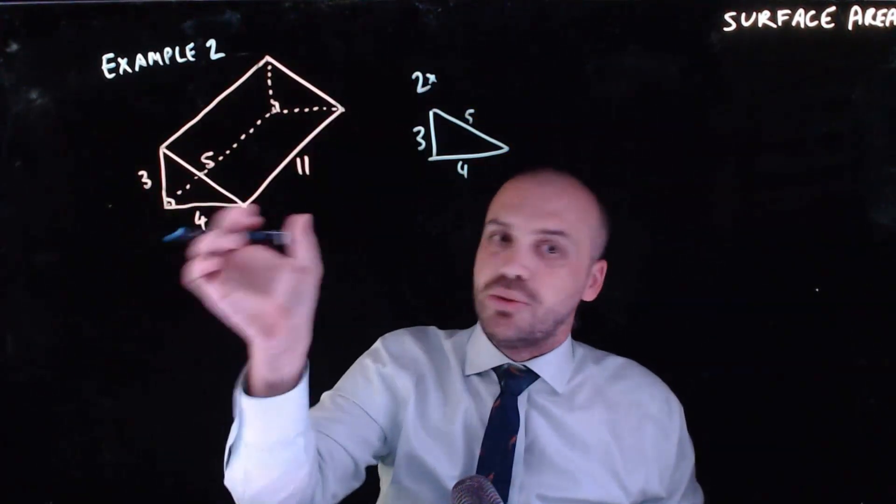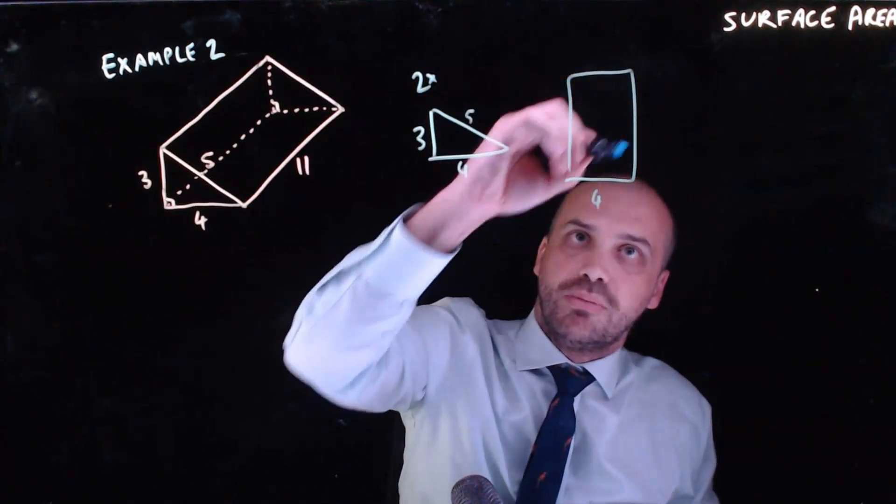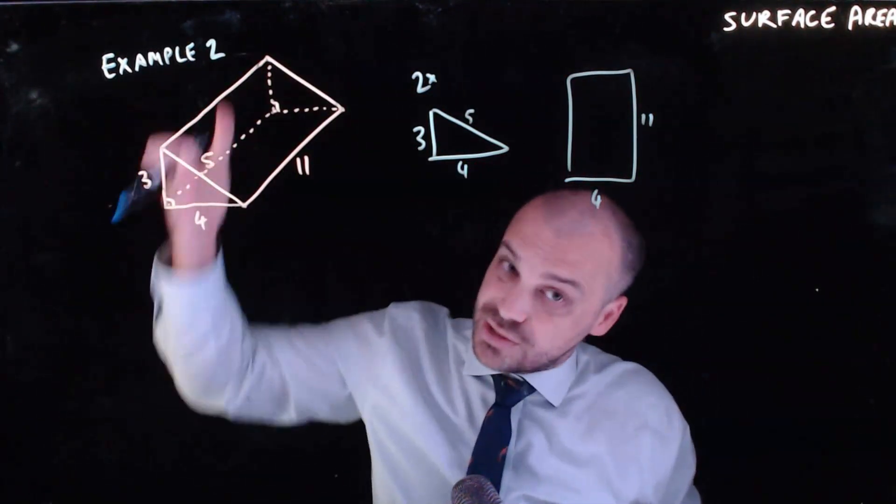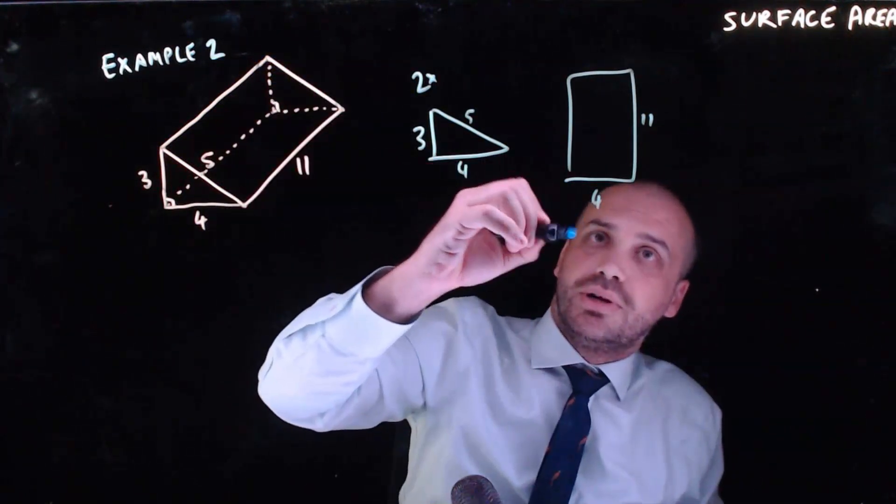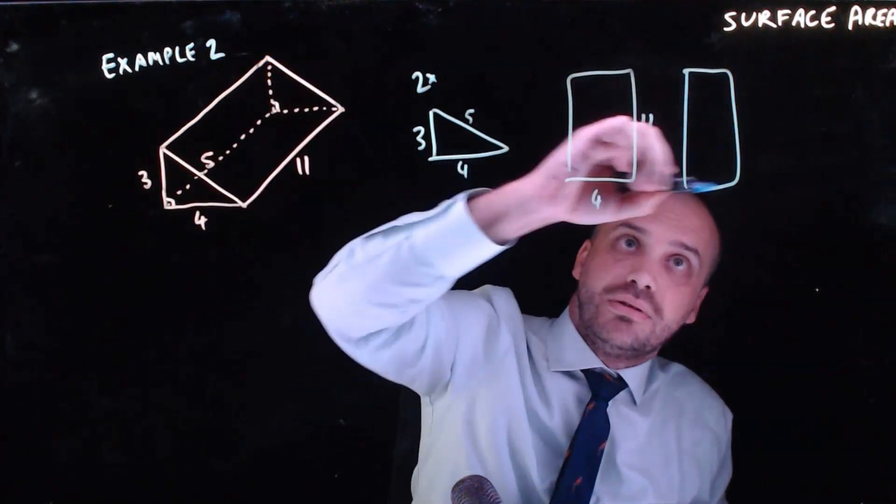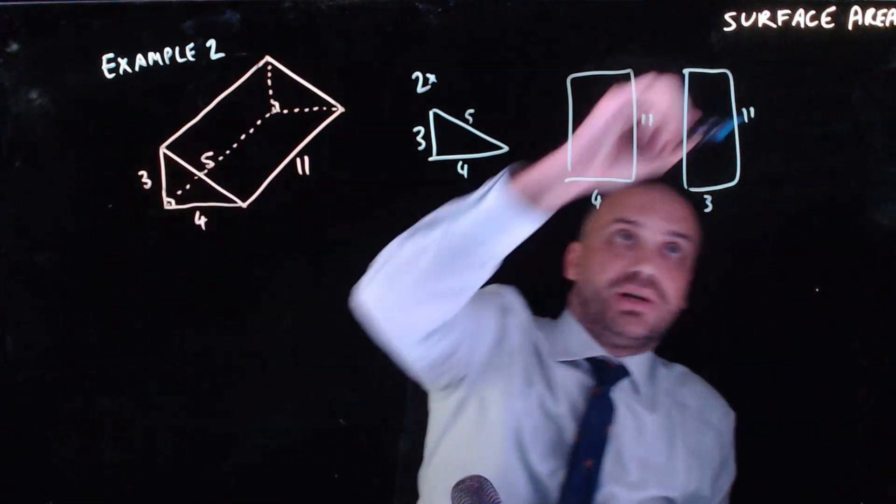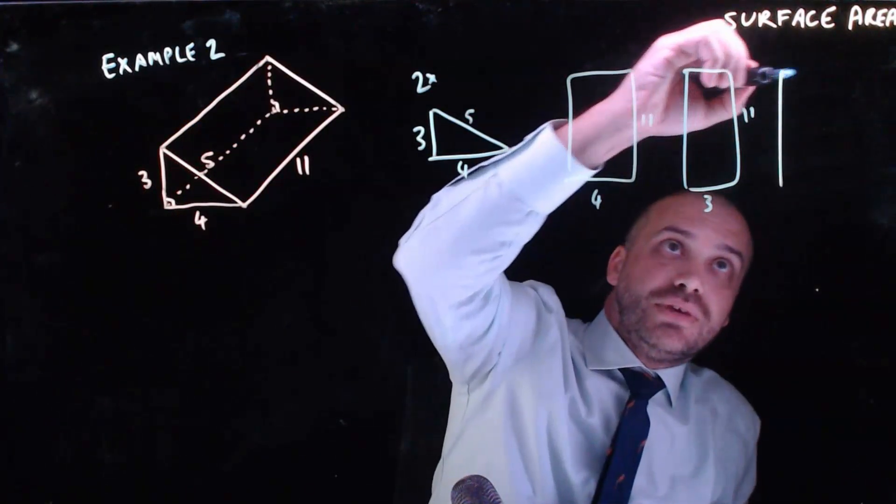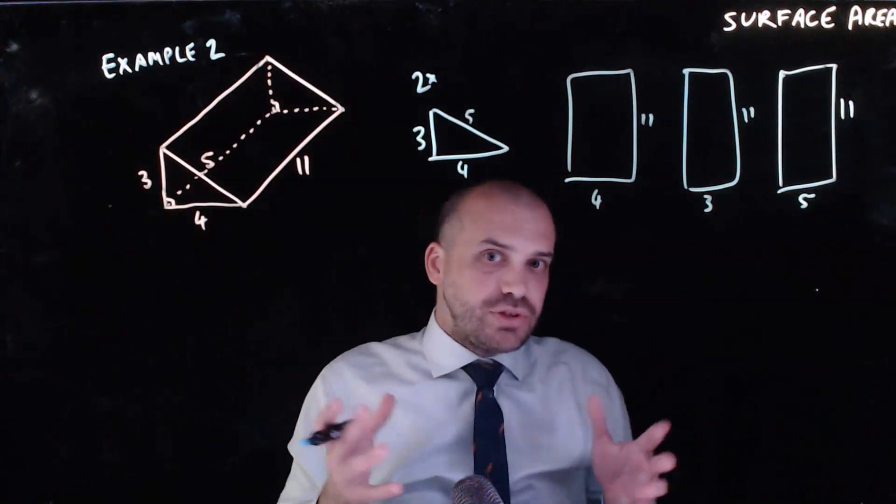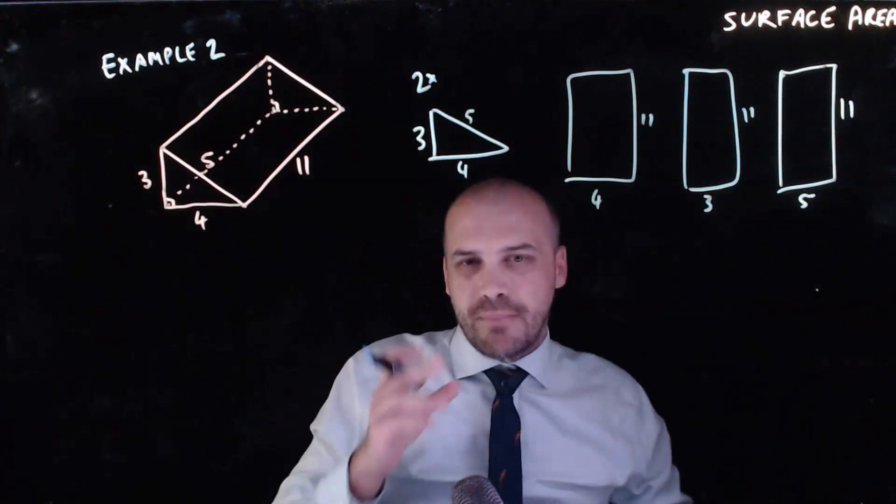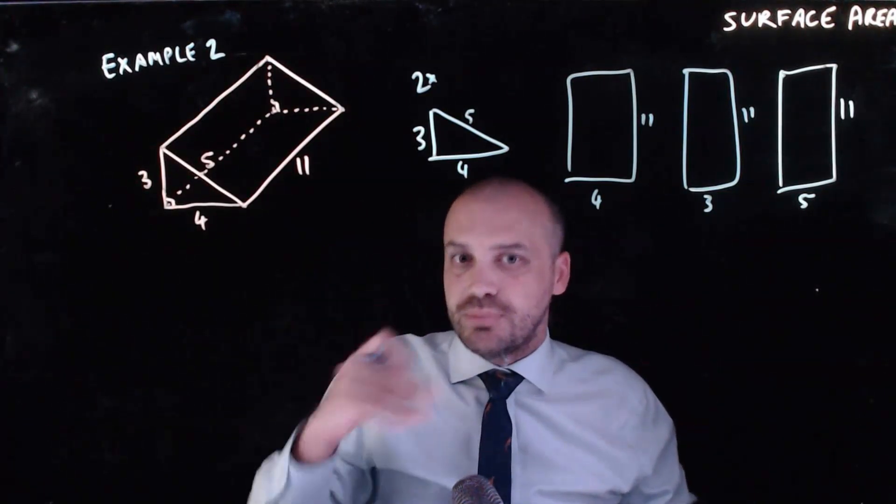We're going to have a rectangle on the bottom that's going to be 4 across and 11, 4 by 11. We're going to have a rectangle on that side there that's going to be 3 high and 11, 3 by 11. And finally we're going to have this sloping one here that's 5 by 11. So you can see it's relatively straightforward. It's just three rectangles and two triangles but it really is writing it all down and getting an idea of what you're dealing with before you get started.